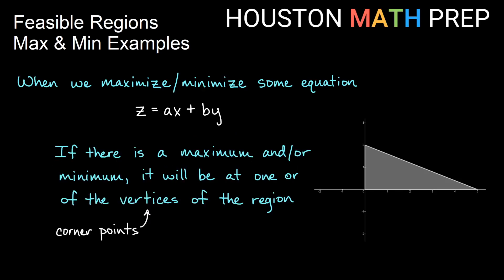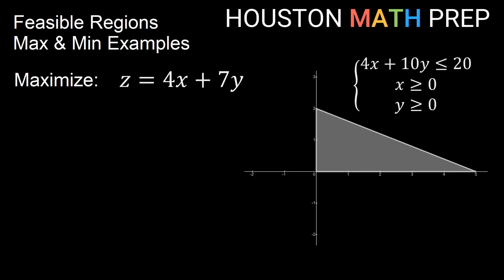When we maximize or minimize an equation like z equals some number times x plus some number times y on a system of linear inequalities, the maximum or minimum value is going to occur at one of the vertices of the feasible region — in other words, at one of the corner points. We'll need to label those corner points and determine which one gives us the most or least out of the equation.